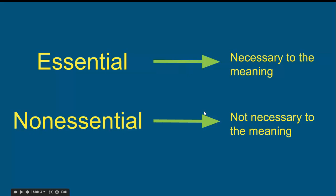Let's take a look at essential versus non-essential. Essential phrases are necessary to the meaning of the sentence. So if we took the phrase out of the sentence, we would lose meaning that we need. Without that essential phrase, we would not completely understand the sentence. If the phrase is essential, we do not use commas.